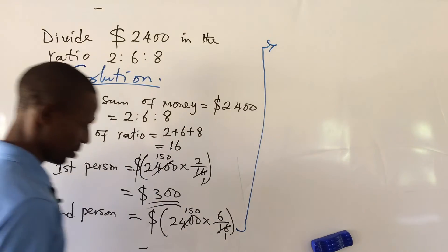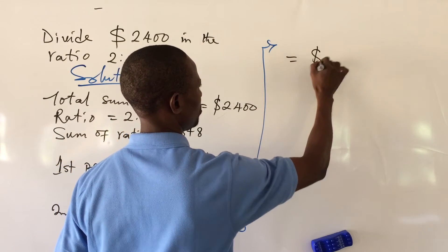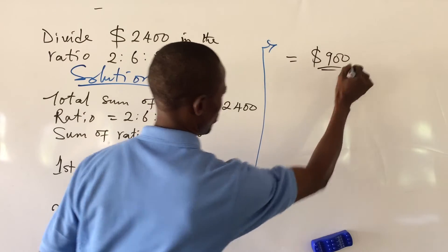This is going to give us here 900, so we'll have this to be $900.